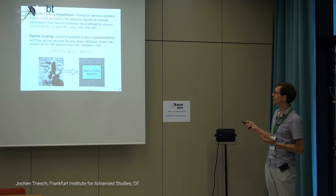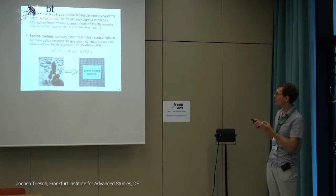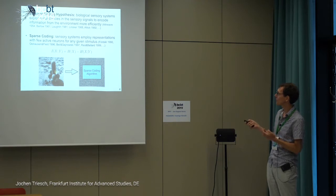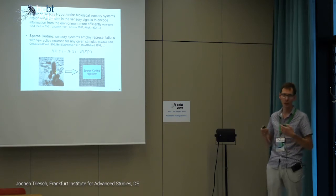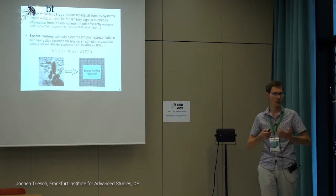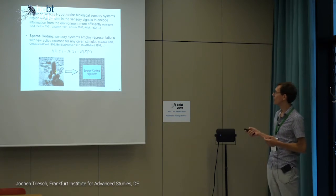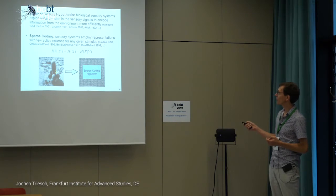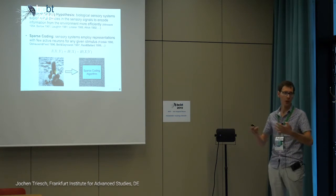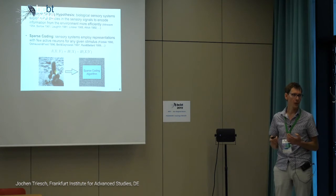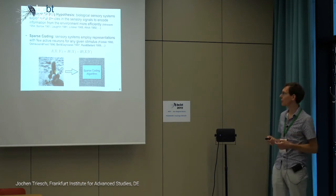The efficient coding hypothesis basically says that biological sensory systems should look at the statistical properties of sensory signals and exploit redundancies to encode information as compactly and efficiently as possible. This goes back to Etniv, famously Barlow, and has been a big driving force in trying to understand sensory systems in neuroscience.